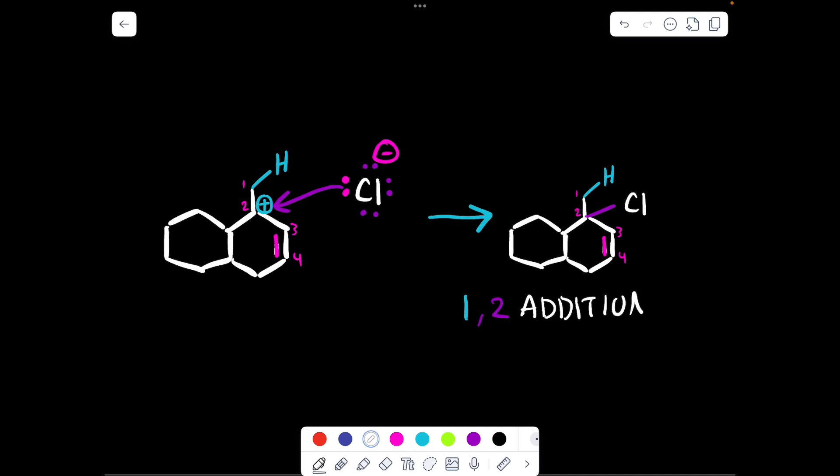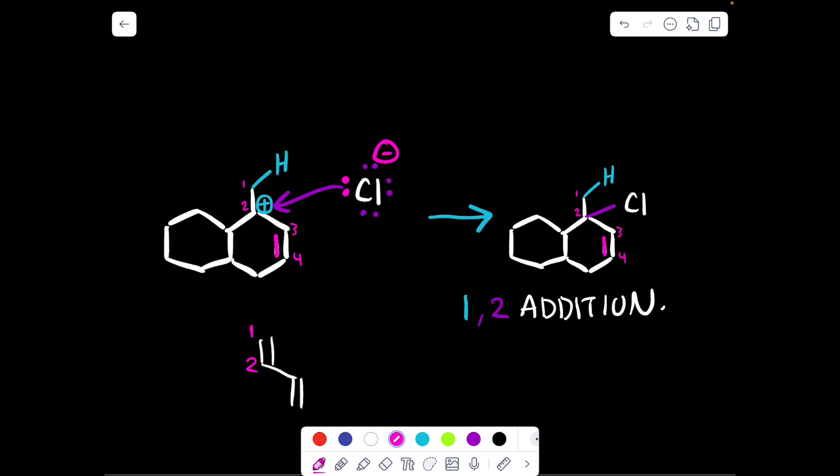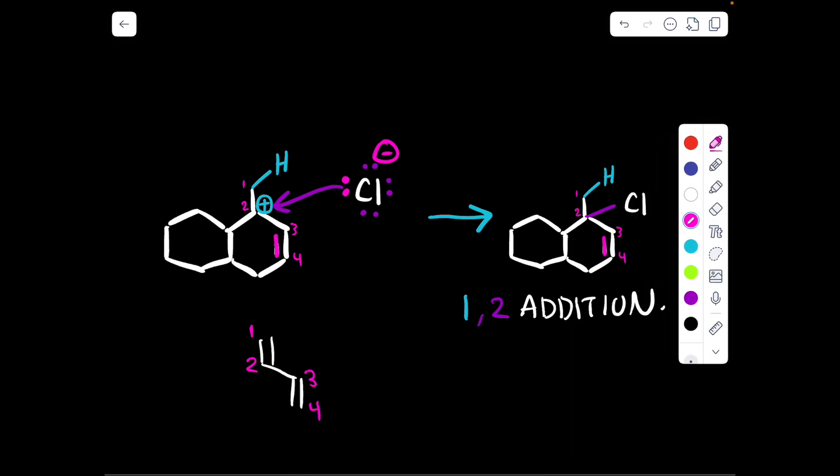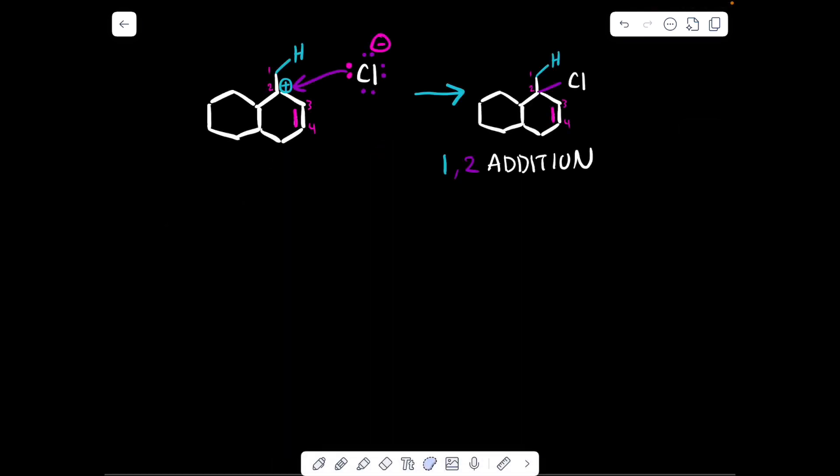With respect to the labeling of our diene, carbon number 1 grabbed the hydrogen and carbon number 2 grabbed the chlorine, hence a 1-2 addition. It's referring to where the hydrogen adds and where the chlorine adds with respect to the diene. And the labeling goes, you label 1 to 4, and carbon number 1 and 2 will be the first carbon-carbon bond that reacts first. Then 3 and 4 is the other pi bond that reacts second.